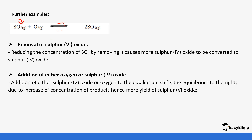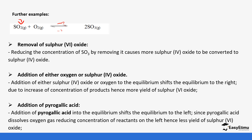Addition of SO₂ and oxygen to the equilibrium also shifts the equilibrium to the right due to an increase in concentration of reactants, hence giving more yield of SO₃. On the other hand, addition of pyrogallic acid will shift the equilibrium to the left because pyrogallic acid dissolves oxygen, giving less concentration of the reactant. So the system works such that the products decompose more to form more reactants in order to stabilize and return to equilibrium.